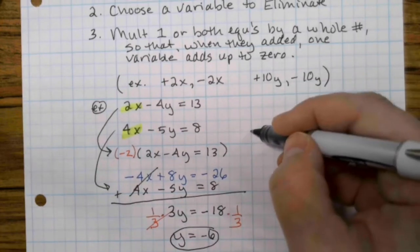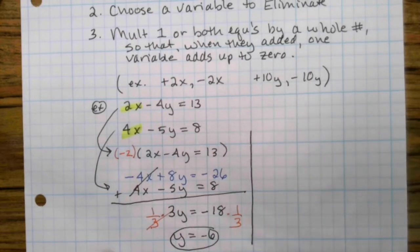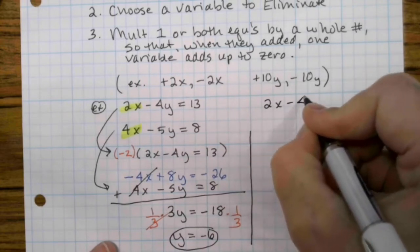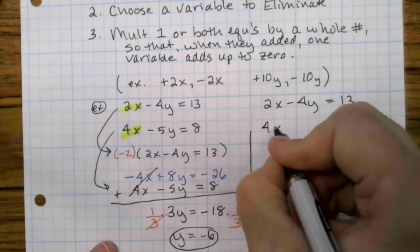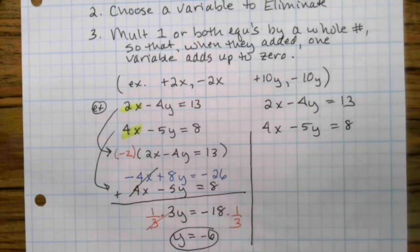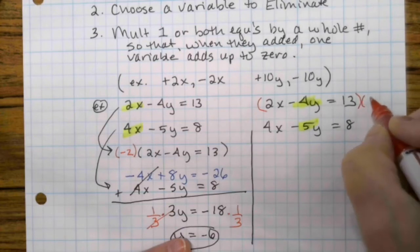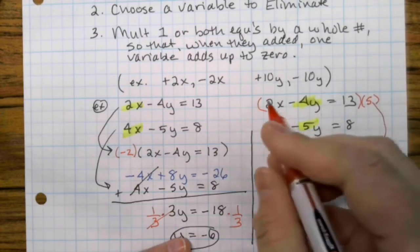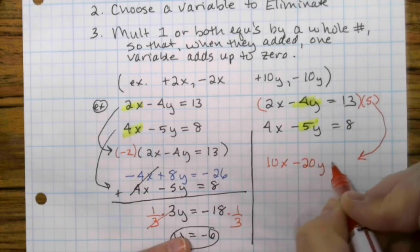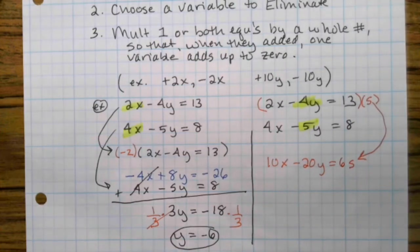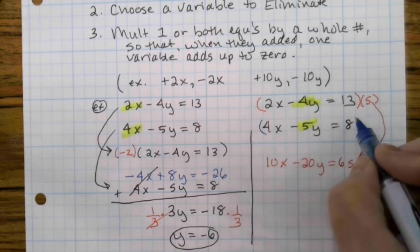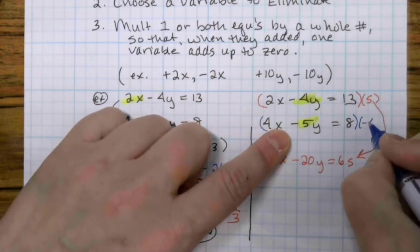All right. So now that we have eliminated the x's, now we're going to eliminate the y's. So let me just rewrite the equations here. 2x minus 4y is 13. 4x minus 5y is 8. So on our second pass, we want to eliminate y's. I have a negative 4 and negative 5. The lowest number that a 4 and a 5 will go into is a 20. So I want one of them to be a positive 20 and one of them to be a negative 20. So I'm going to take the first one and I'm going to multiply by a positive 5.